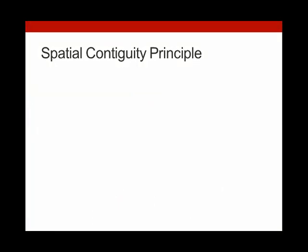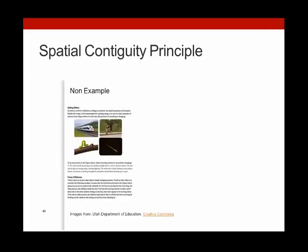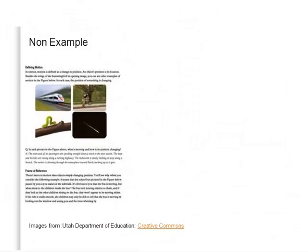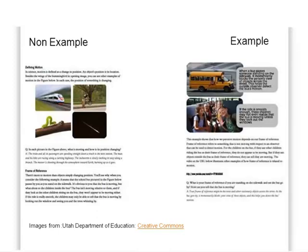The spatial contiguity principle states that words and pictures should appear close to one another. Notice in this first example that the images of the train, the caterpillar, etc., are separate from the text they're describing. Anyone who wants to use these pictures to help them make sense of the text must switch between looking at the images and reading the text. Switching causes extra load, and load frustrates learning. The further the text and images are from one another, the greater the load. Now take a look at this second page from the same textbook — in this example, the text is right next to the image it describes. Combining these elements in this way makes it easier on the reader, decreasing load and enhancing the effectiveness of the learning material.